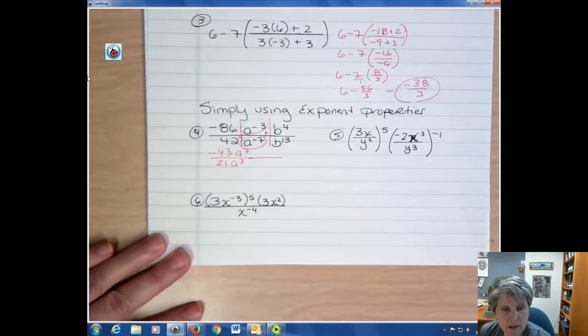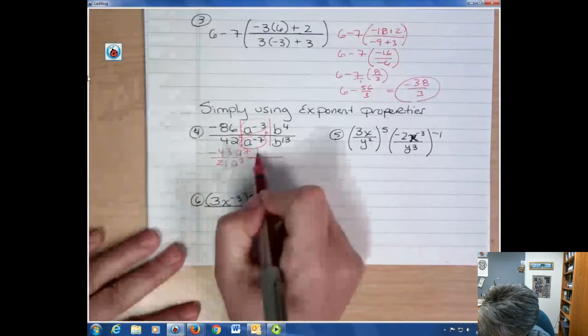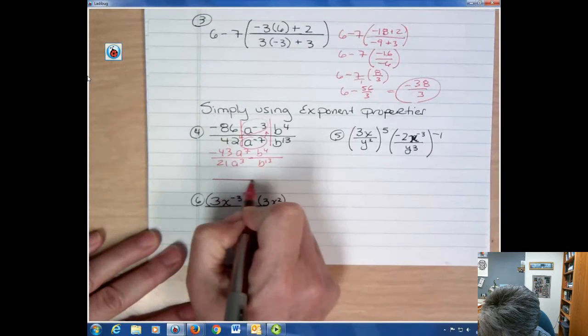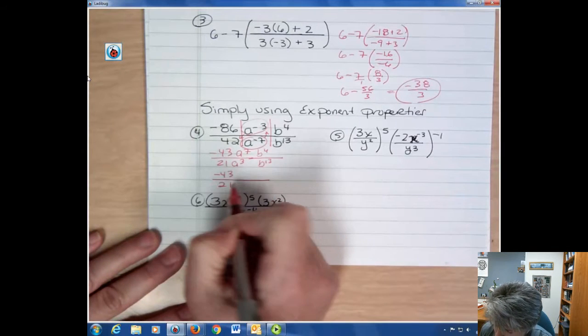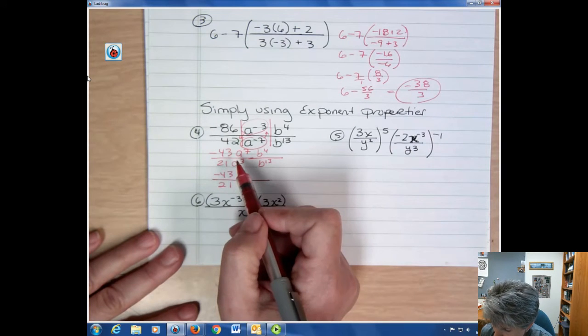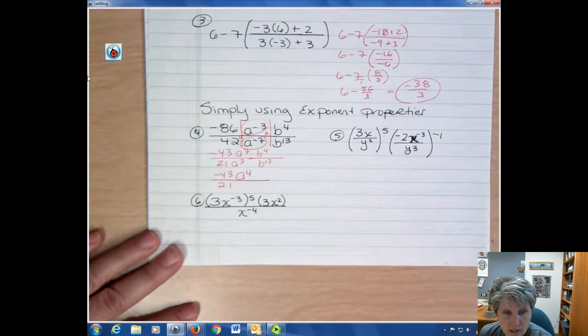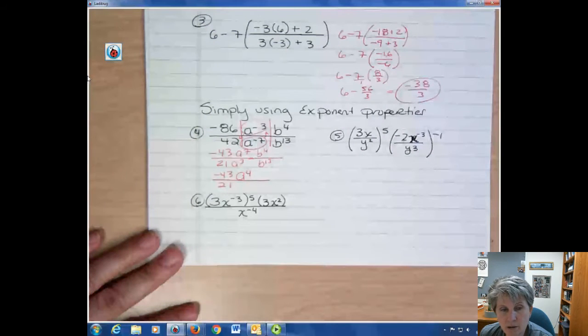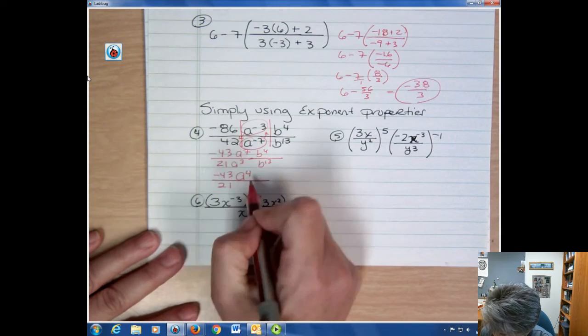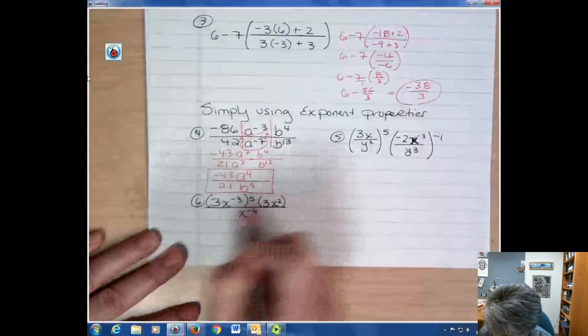So that A to the negative 3 goes down and A to the negative 7 goes up. And when they change places, then they become positive. And then I'm just going to write these down for now. Now I need to simplify. Well, I've got negative 43 over 21. Where do I have more A's? I have more A's on top by how many, you're actually subtracting. You get A to the fourth. And where do I have more B's? I have more B's in the denominator. How many, actually subtract. 13 minus 4 and you get 9. And there's 9 extras in the denominator. So that's what your answer would look like.